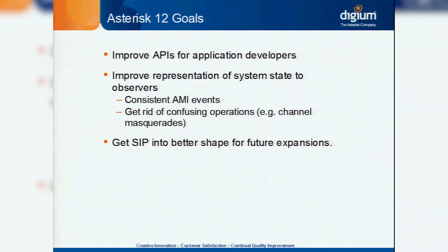In order to understand where we came from on this, it's good to understand what the goals of Asterisk 12 actually were. The top two bullet points are the big driving factors. We wanted to make Asterisk a better platform for people to develop applications — you've probably heard ARI mentioned today. We also wanted people to get consistent state from Asterisk. AMI events in Asterisk 12 look a whole lot better. You no longer see weird things like channels being renamed, zombie channels, or masquerades happening, due to some big refactoring done on the inside.